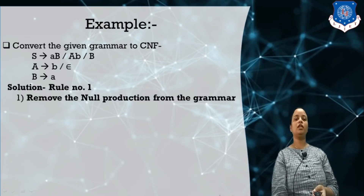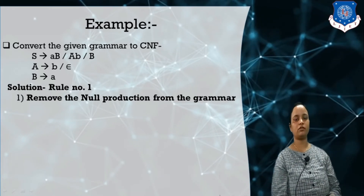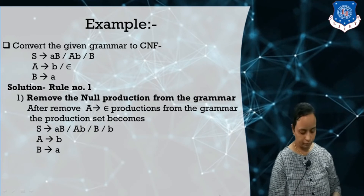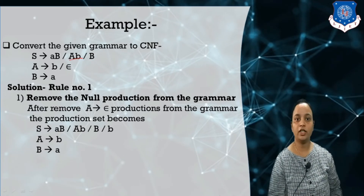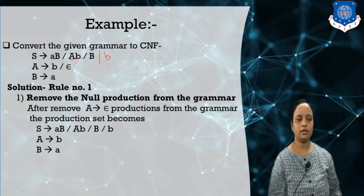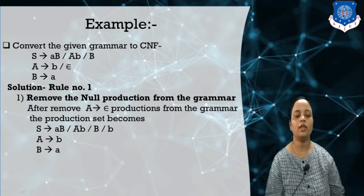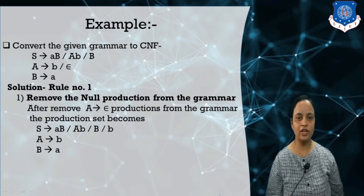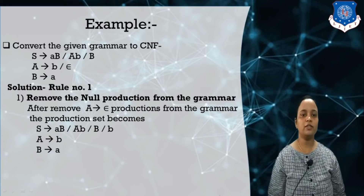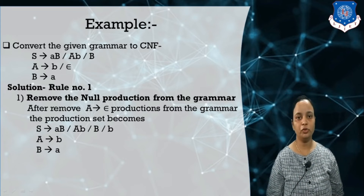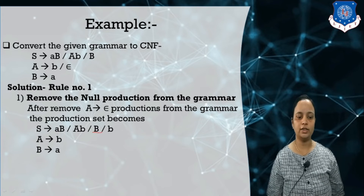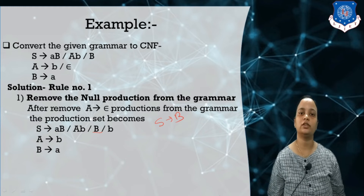We have already discussed the steps for removing nullable productions. After removing the nullable production, we get the updated grammar. The productions containing A are modified by substituting A with null and keeping the remaining part. After removing the nullable productions, we check whether the grammar contains any unit production. A unit production has a single non-terminal on its right-hand side. After identifying the unit production, we are trying to remove it.